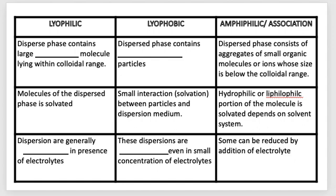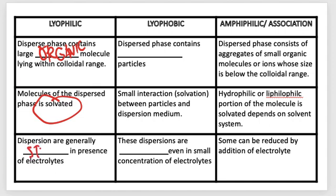Here are some of the differences between lyophilic, lyophobic, and amphiphilic or association colloids. For lyophilic colloids, they are basically dispersed — the dispersed phase contains large organic molecules lying within colloidal range. The molecules of the dispersed phase are solvated, meaning all the molecules of the dispersed phase dissolve into the dispersing medium. The dispersions are generally stable in the presence of electrolytes.